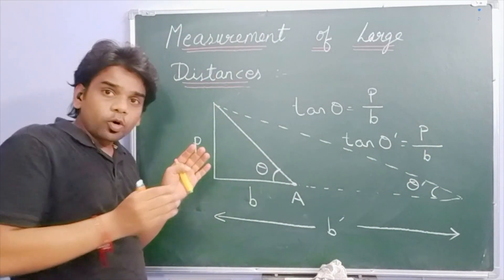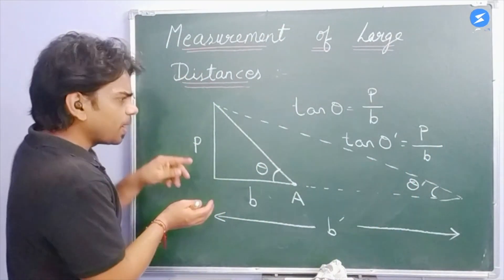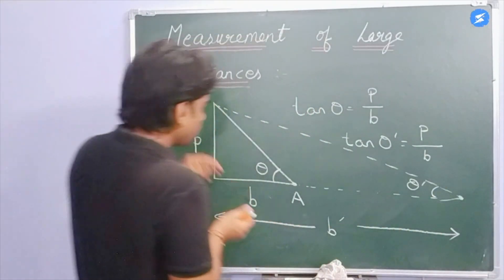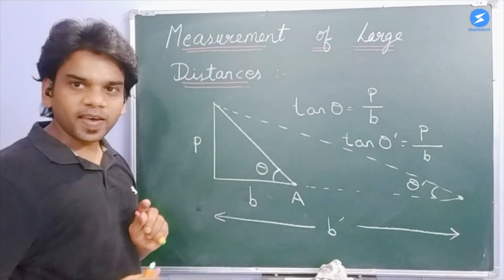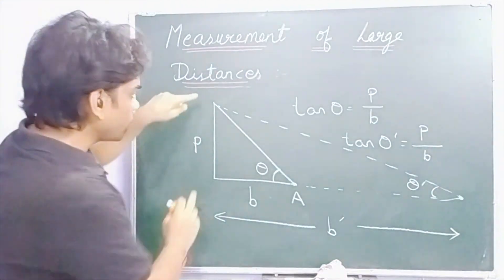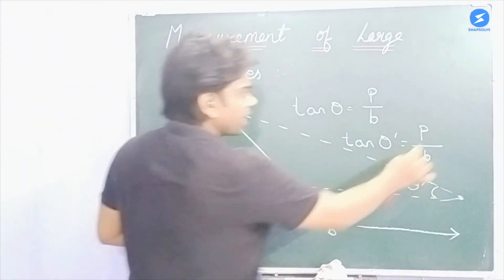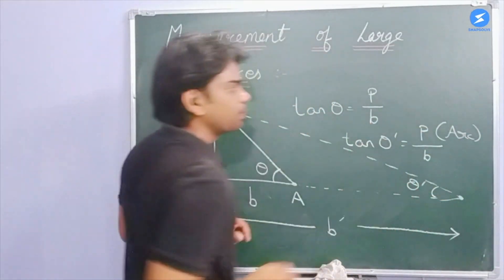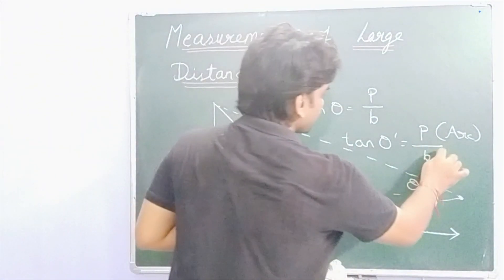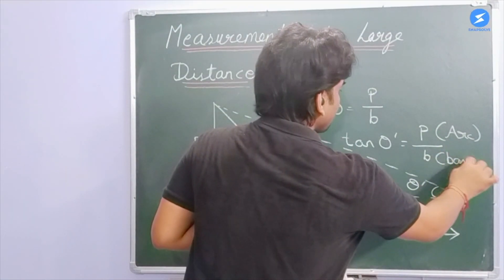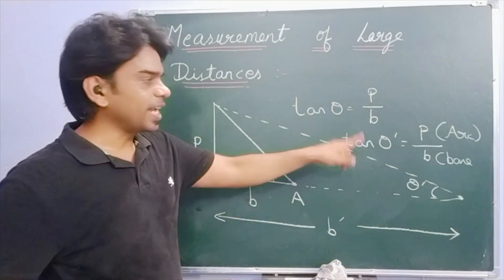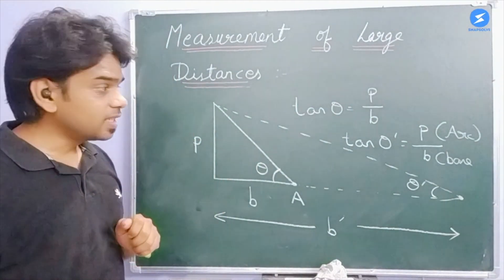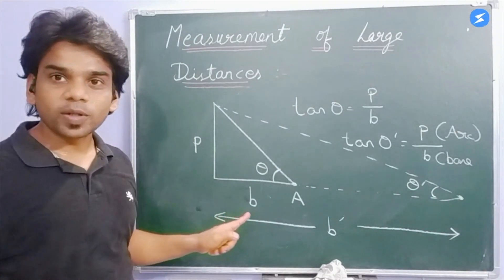As the point goes very far, we can think that this is the center point and this is a small arc. So, the perpendicular approximates the arc length, and the base B approximates the radius. So we have tan theta dash, and theta equals arc length upon the radius.